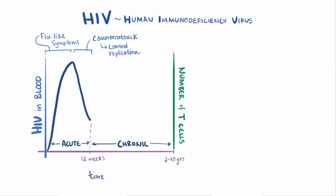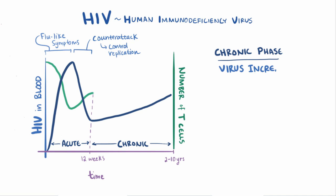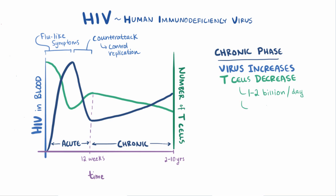If we plot the amount of T cells alongside the amount of virus, we'll see that they loosely mirror each other, which makes total sense. Initially you have a considerable decline in the acute phase until the immune system mounts its counterattack. After this point, even though there might not be any clinical signs or symptoms, the virus is steadily chipping away at the immune system — the number of viruses in the blood slowly increases while T cells slowly decrease, losing about 1–2 billion T cells every day. During this chronic phase, T cell counts usually remain above 500 cells per cubic millimeter, and patients can still fight off other infections fairly well, although some infections like tuberculosis become more common and severe.